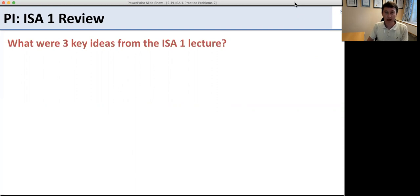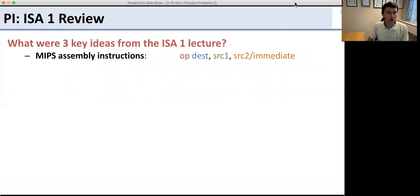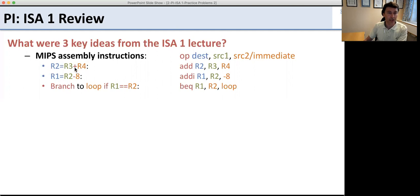Now I'll tell you the three ideas I had — you may have had different ones, and that's fine. The first was MIPS assembly instructions: they have an op code, a destination, and source registers or an immediate. We saw examples — add with destination and sources, add immediate for a constant, and branch instructions. All instructions follow this format.